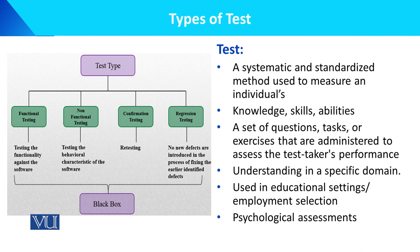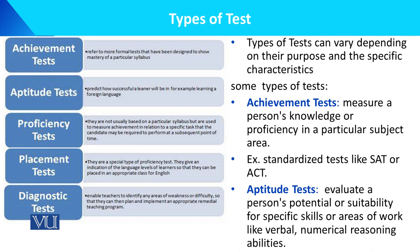The types of tests can vary depending on their purpose and specific characteristics. The first type is the achievement test — यह normal students की achievement है, their class achievement. It measures a person's knowledge or proficiency in a particular subject area, like standardized tests such as SAT and ACT.